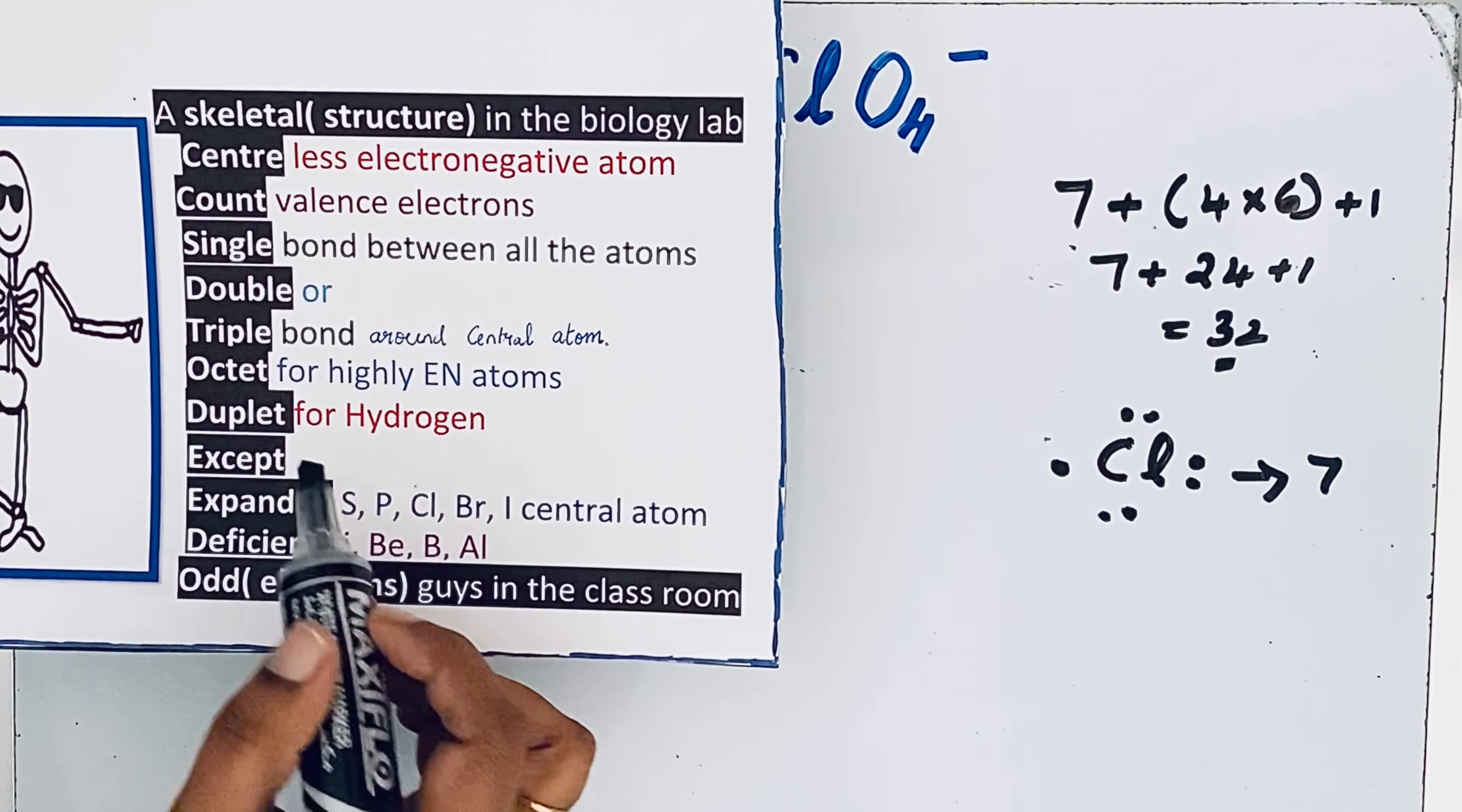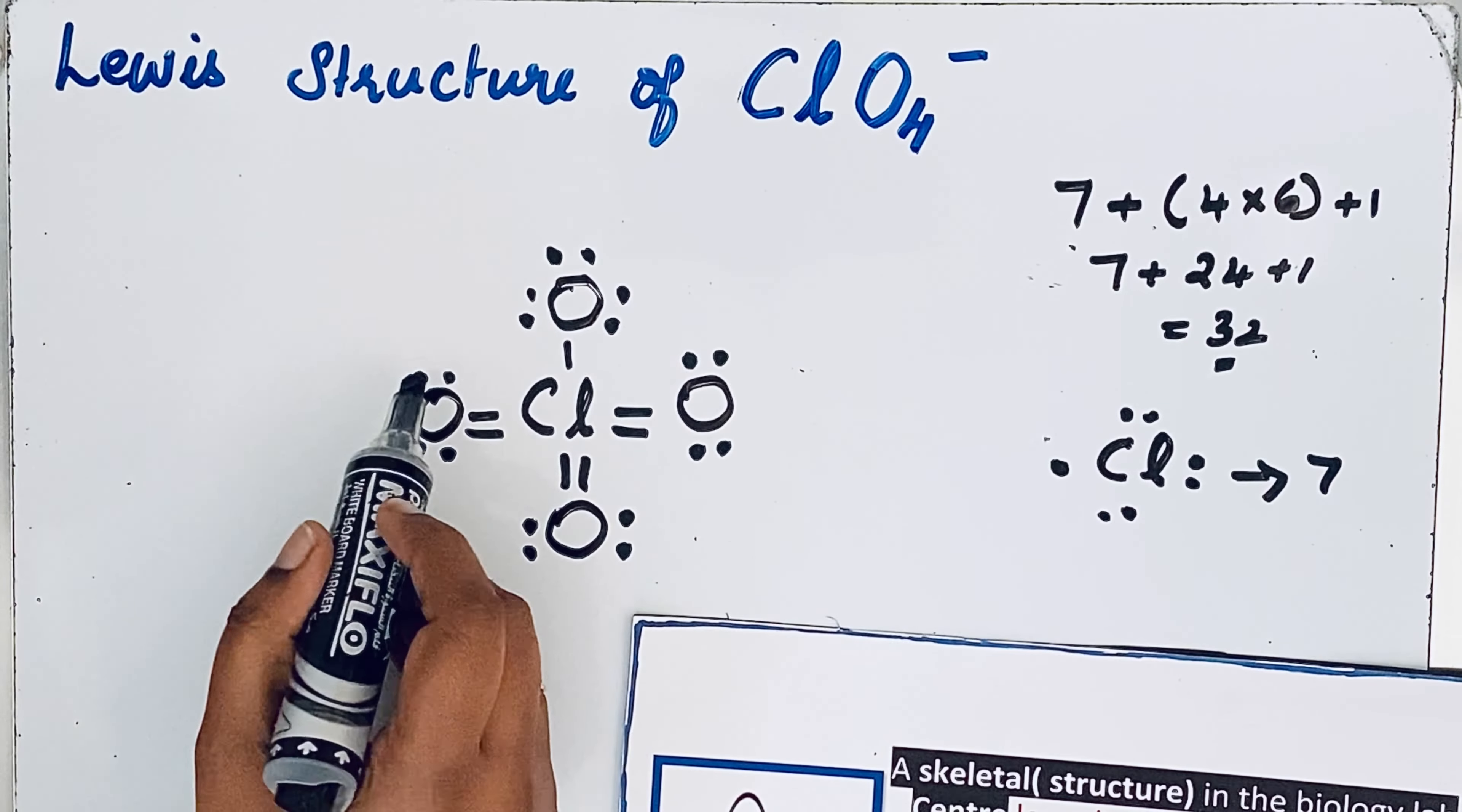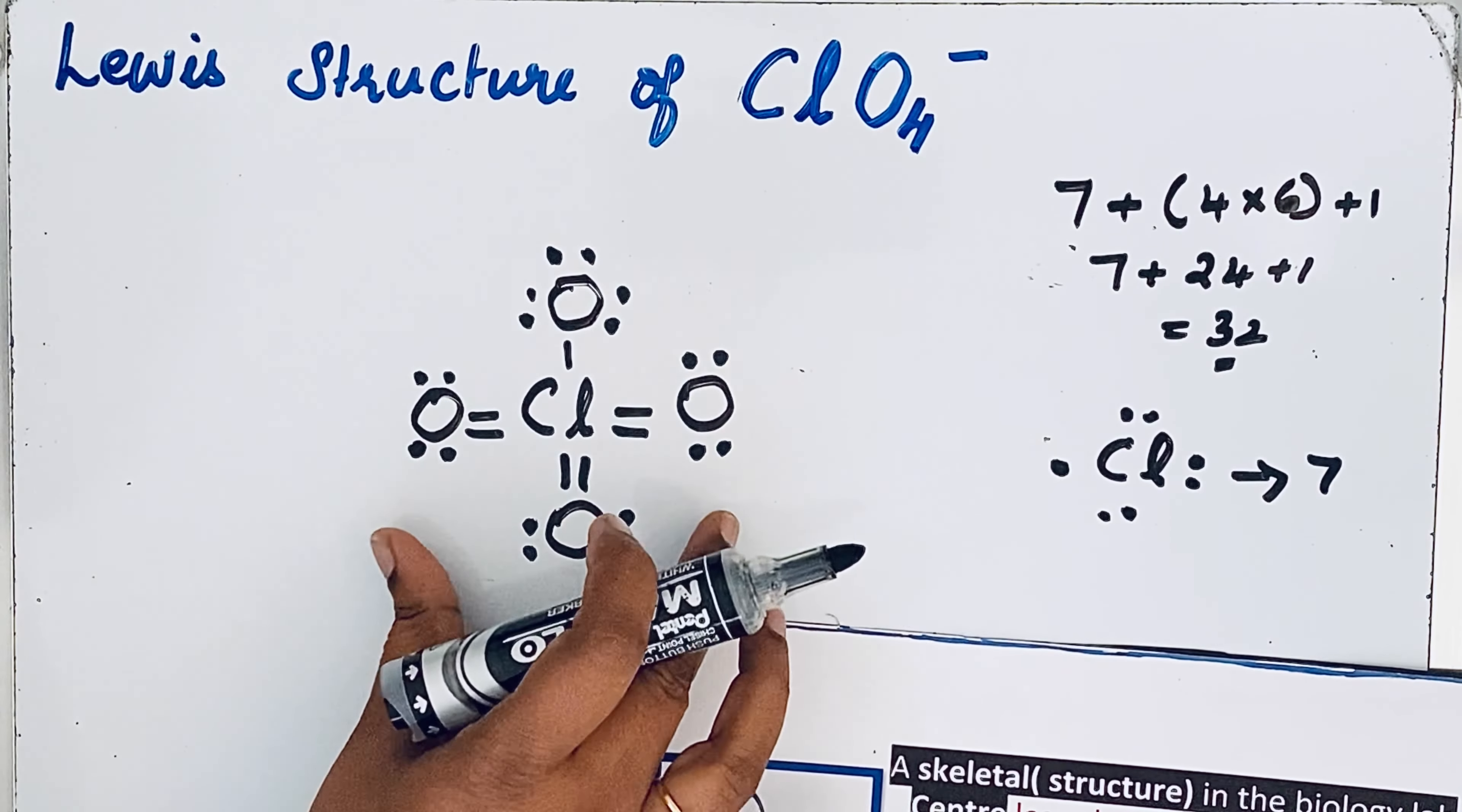Duplet for hydrogen. Anyhow we don't have hydrogen in this compound. Now we can check that 32 valence electrons are present in this compound or not. Two, four, six, eight, ten, twelve, fourteen, sixteen, eighteen, twenty, twenty-two, twenty-four, twenty-six, twenty-eight, thirty, thirty-two. So thirty-two valence electrons are present.